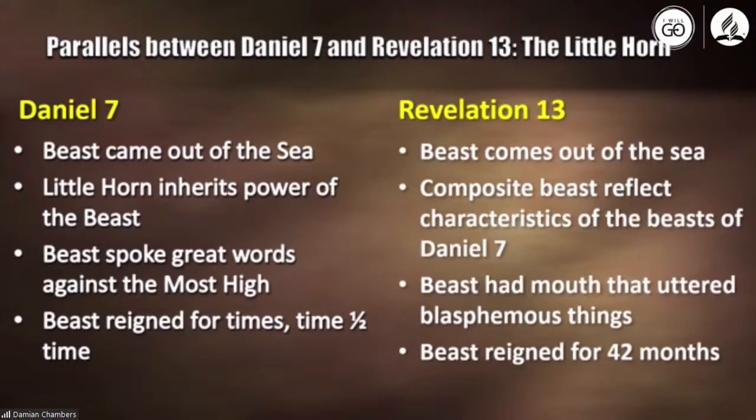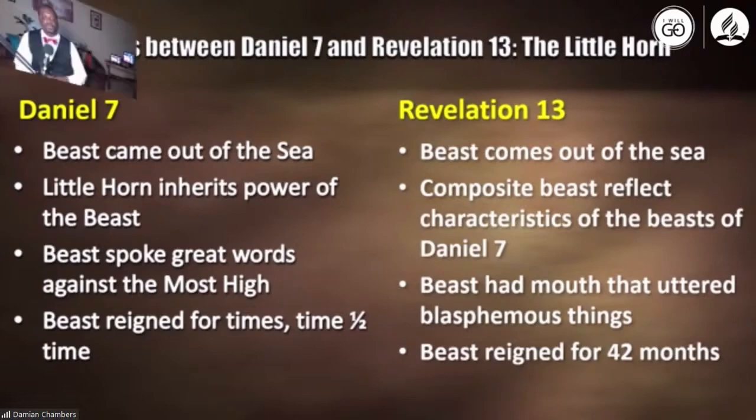If you do the calculation, you'll realize it's the same time period. Both 'a time, times, and half a time' — representing three and a half years — and 42 months are the same amount in Bible prophecy, and the same as 1,260 years. So the beast of Revelation 13, verses 1 and 2, throughout the entire chapter, is a continuation of the kingdoms and runs parallel with the little horn of Daniel chapter 7.